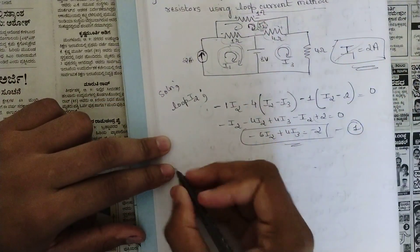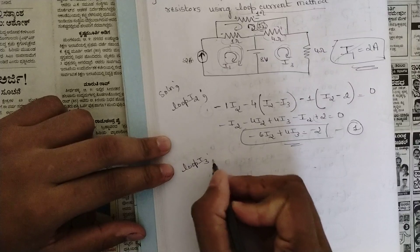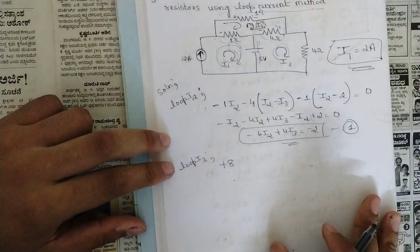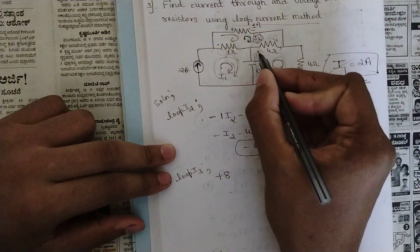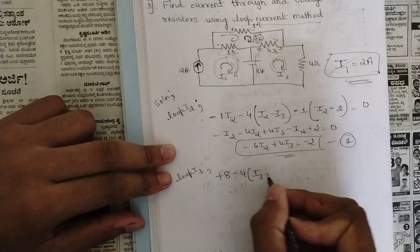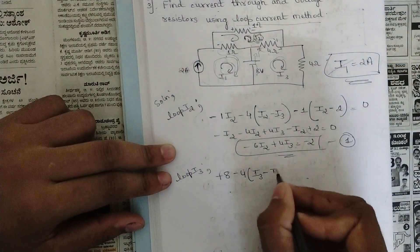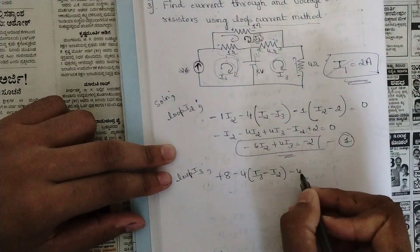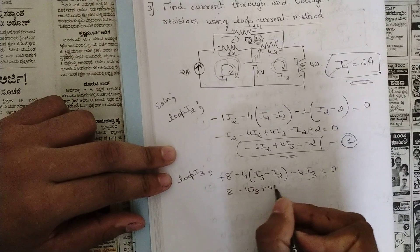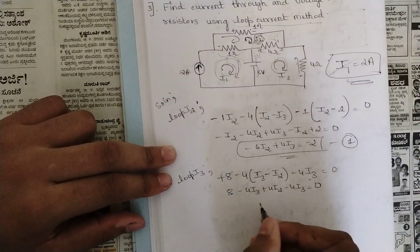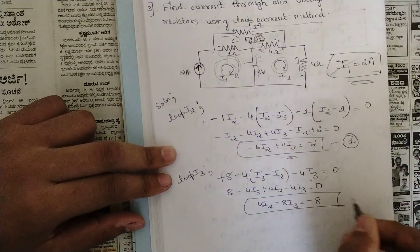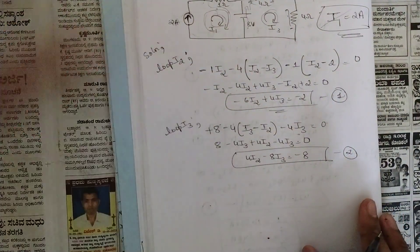Now consider loop i3 and apply KVL. Starting from the voltage source: +8, then −4·(i3 − i2) for the 4-ohm between i3 and i2, then −4·i3 for the remaining 4-ohm. Simplifying: 4·i2 − 8·i3 = −8. This is equation 2.